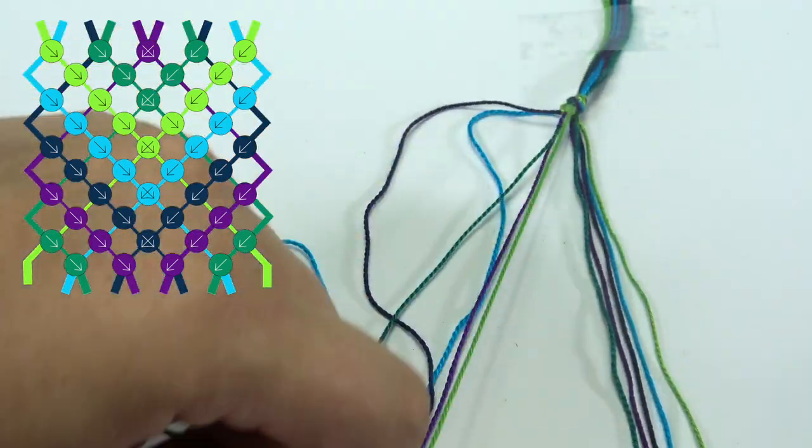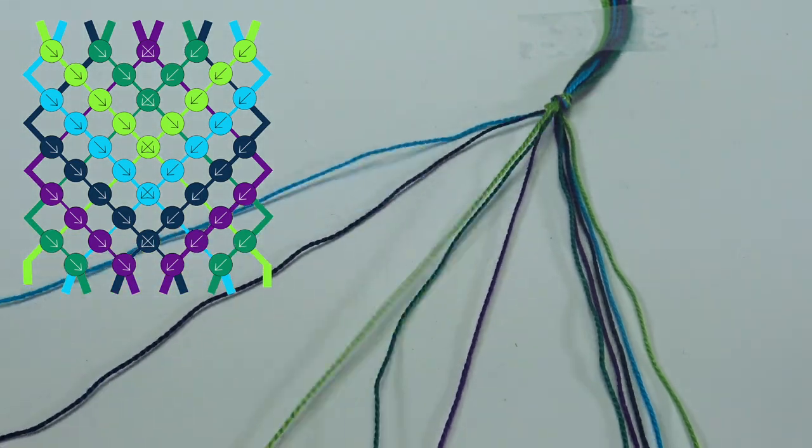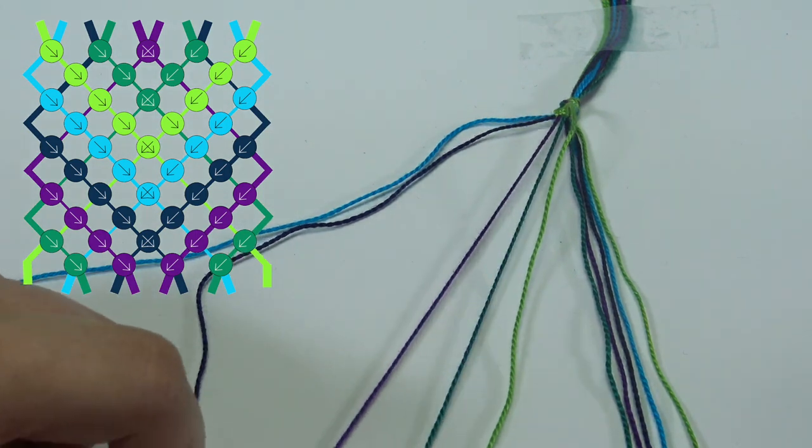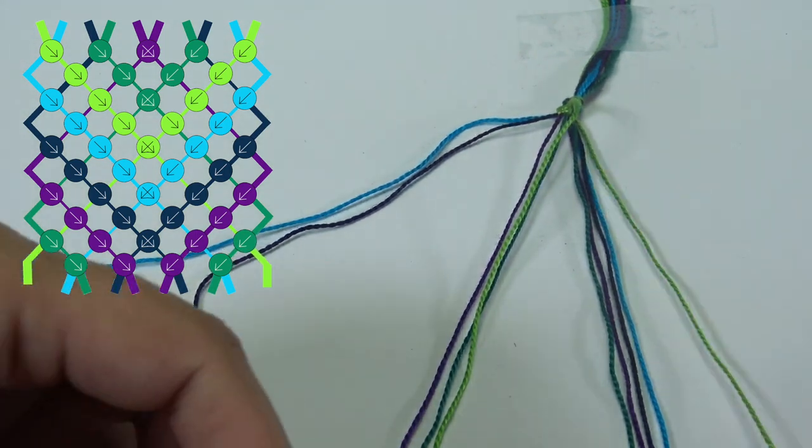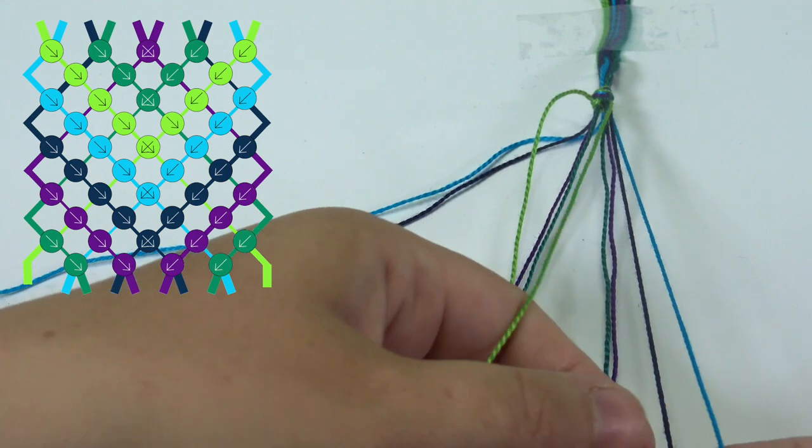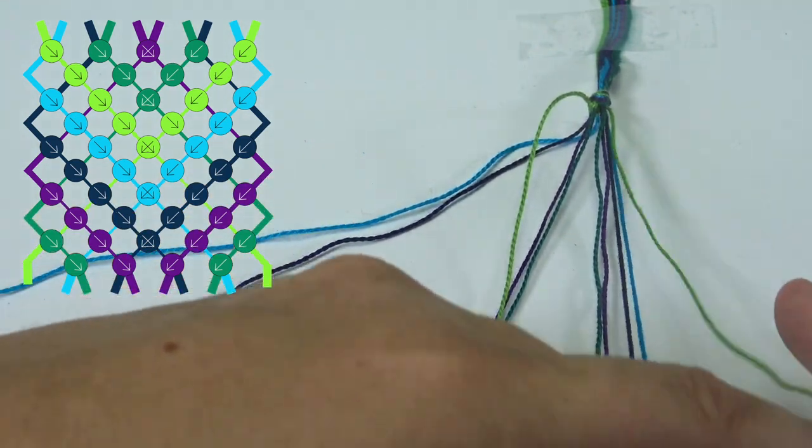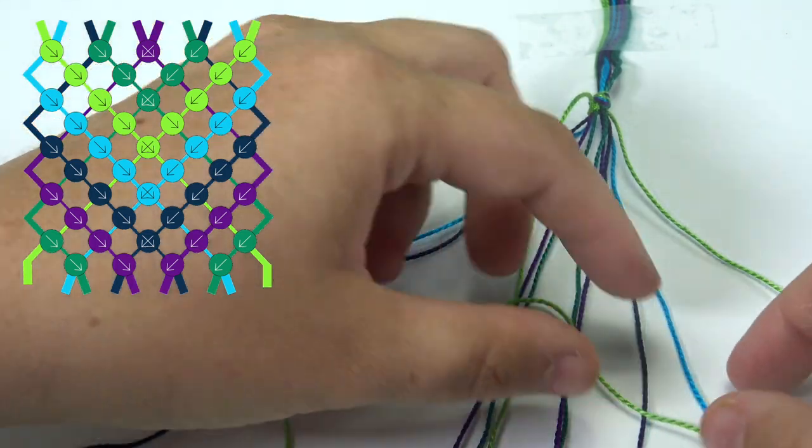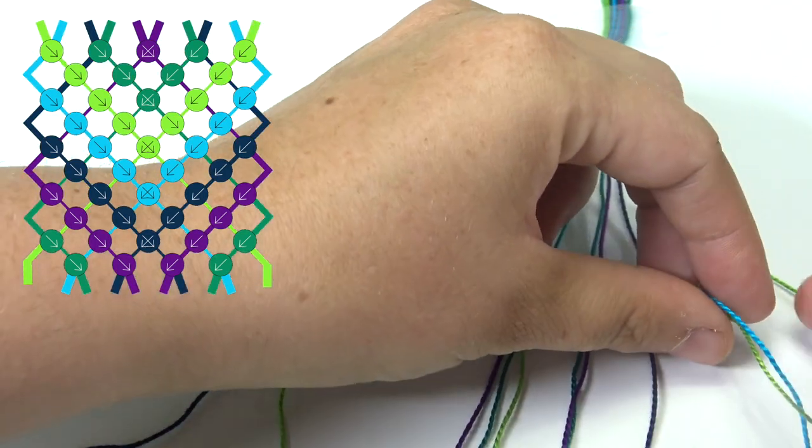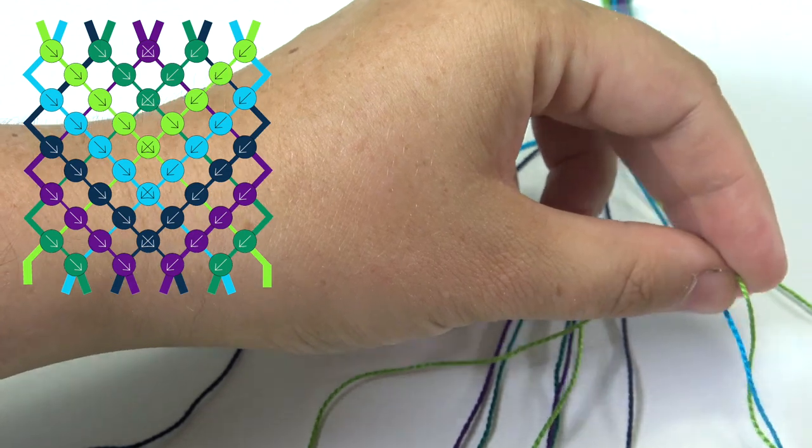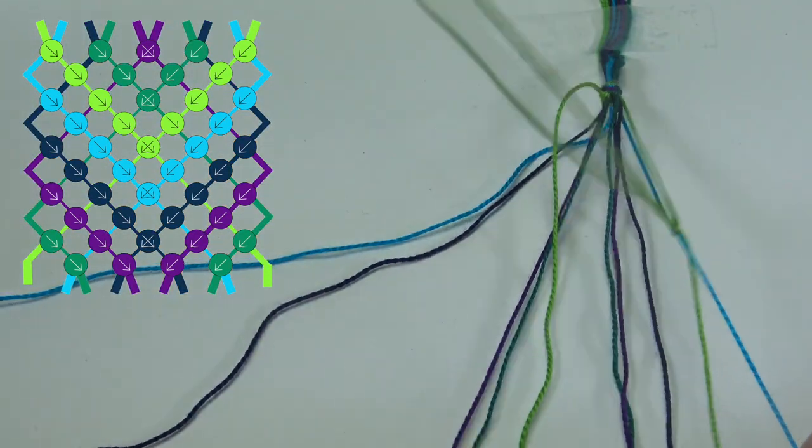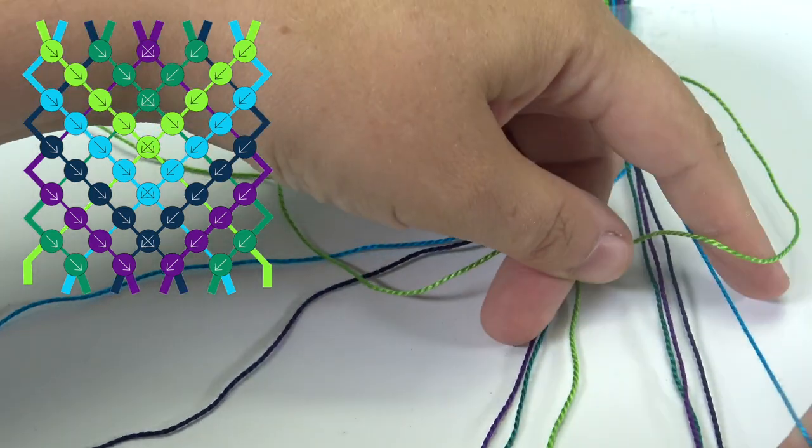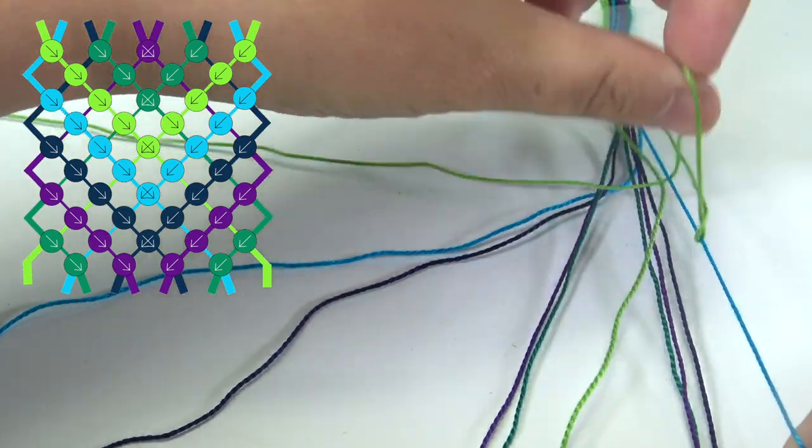Now our light green is here in the middle and this is our new order on this side. To go in the other direction, same thing but we're doing everything on a mirror image. So over, grab, under, hold the blue tight, pull over, under.